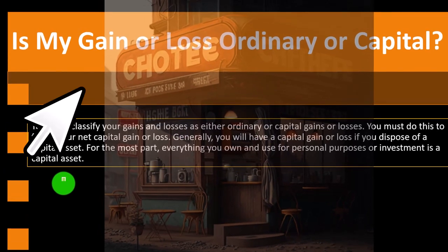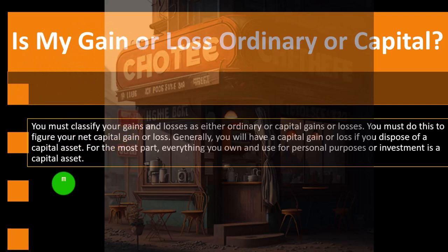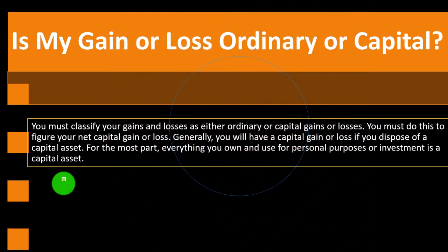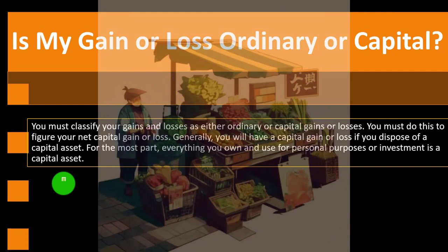If the property was for business, you might be able to get a loss deduction related to it — as opposed to personal property. You couldn't just say you have personal stuff you no longer need, you disposed of it, and take a personal loss. For example, if your TV broke and you threw it away, you can't claim a $1,000 loss — it's personal, not a business thing.